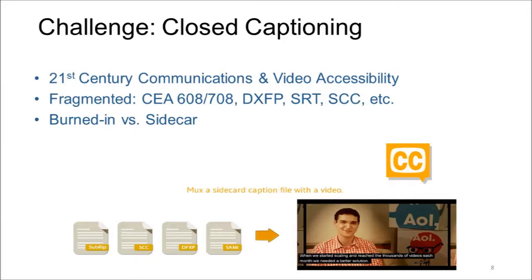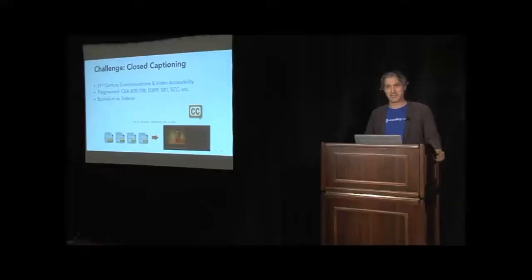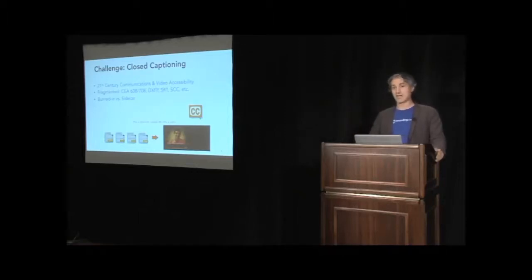Closed captioning similarly has challenges around market fragmentation. If you are a premium content provider or broadcaster, content you've broadcast that you now want to deliver over the internet has to include captions. The challenge is that what you broadcast with burned-in captions — called CEA-608 — is only supported on some of the digital devices you'll be targeting. Many devices support sidecar files, where you take the captions and include them as a text file alongside the video. There are many different competing sidecar file formats. If you're targeting iOS devices, Android devices, and all other devices to maximize your viewership, you're going to have to transcode and include multiple closed captioning formats as well.